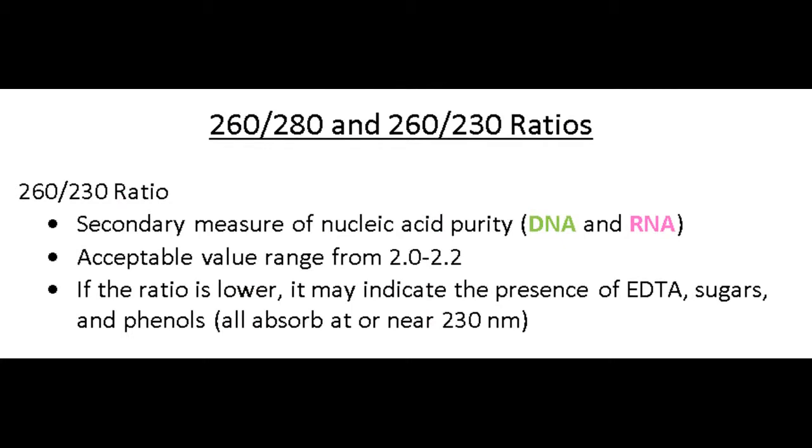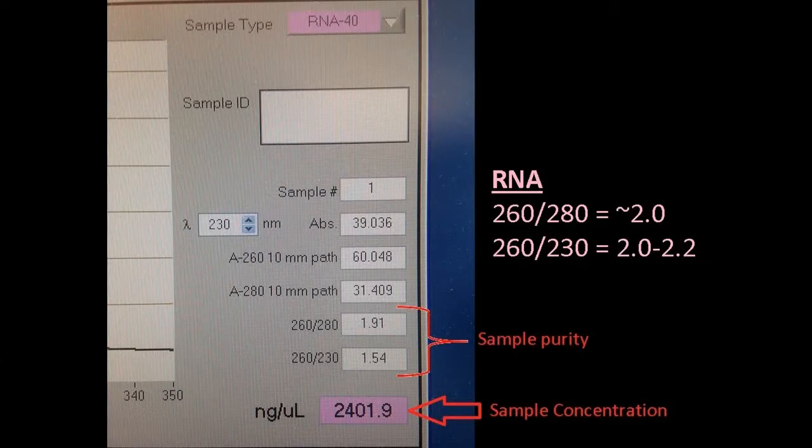The second value that you should take into consideration is the 260 to 230 value, which will tell you whether or not you have EDTA, carbohydrates, or phenol contamination in your sample, all of which absorb near 230 nanometers. Based on the ranges that I have here in pink, the 260 to 280 value of my RNA sample is acceptable.